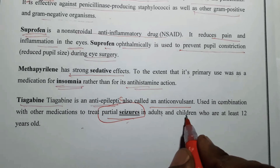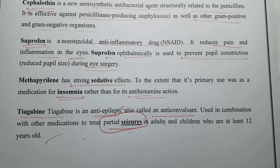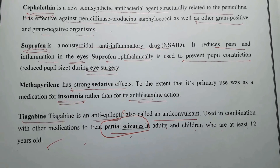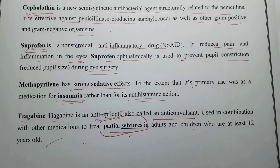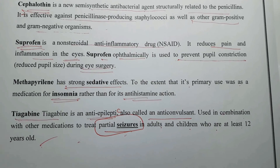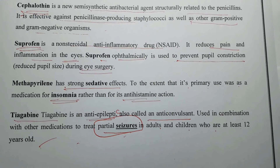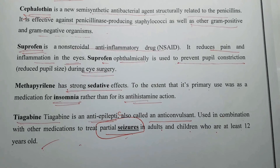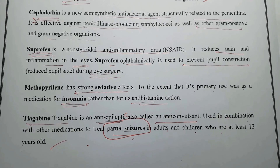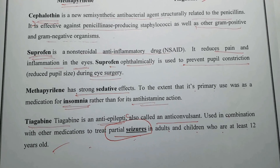In adults and children who are at least 12 years old. These are the medicinal uses of thiophene nucleus-containing drugs. This covers the synthesis, various preparation methods, reactions and medicinal uses of thiophene. For more heterocyclic compounds — reactions, synthesis and medicinal uses — subscribe to my channel. The topics are mainly related to 2nd B-Pharmacy, 2nd Semester Pharmaceutical Organic Chemistry 3 subject. Thank you.